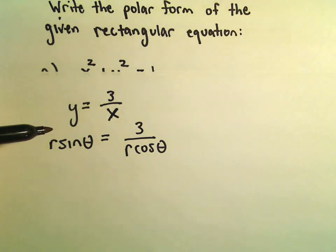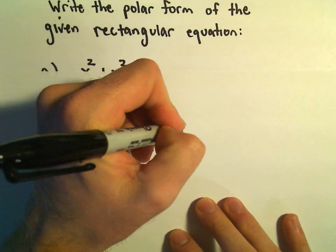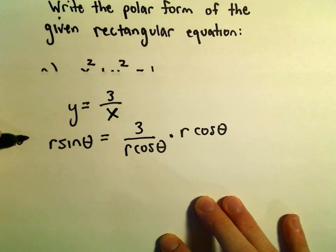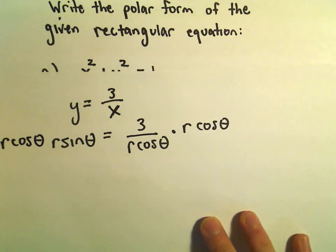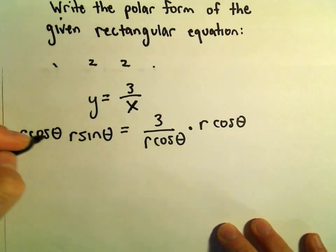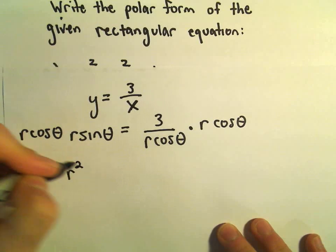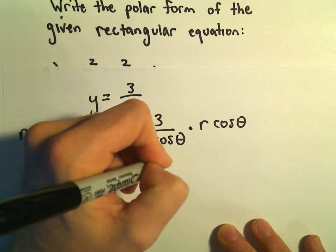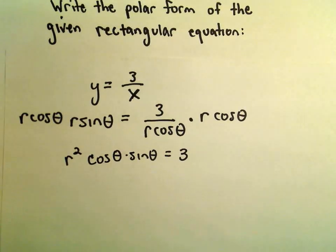x is r cosine theta. Well, again, technically we've now turned it into a polar equation. I'm going to multiply both sides by r cosine theta. So r cosine theta. So on the left side we would have r times r, which is r squared. Then we have cosine theta times sine theta equals 3. Okay.